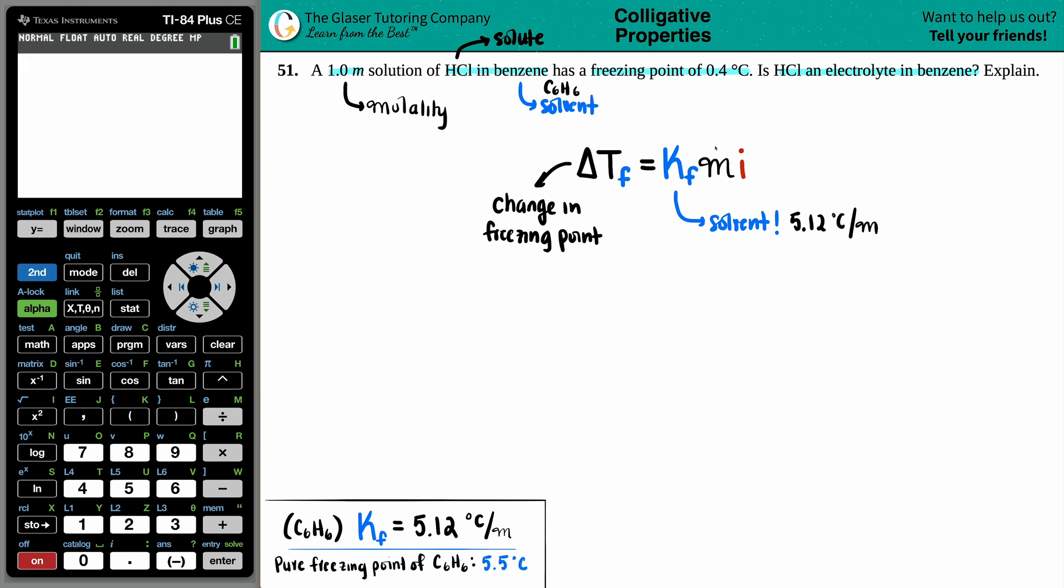They told us that value already - it was a 1.0 molality value. So as of right now, I know the KF, I know the molality. So we're getting close. What do they really want us to find out? The delta TF or the i-value?